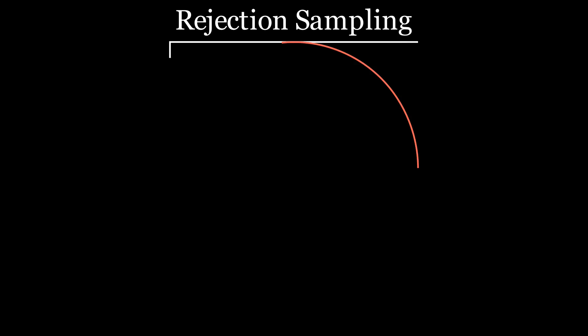The first method that Justin mentioned in his video was rejection sampling. The idea is that we select a random point from a square, where each coordinate is selected uniformly at random between negative 1 and 1. If the point selected happens to be in the unit circle, we're done. If not, we reject that point and select another one. This generalizes easily to n dimensions, so I'm going to implement it.